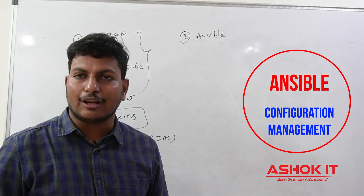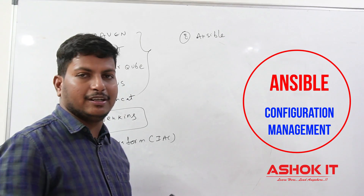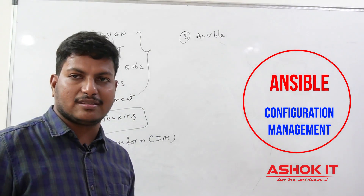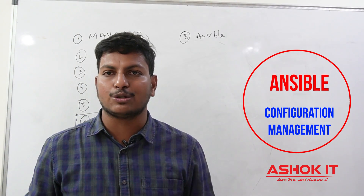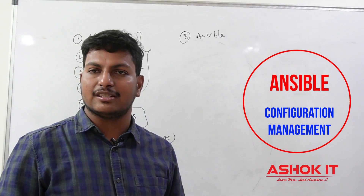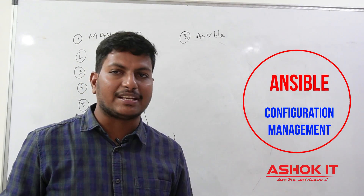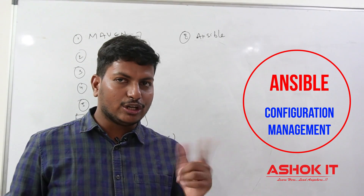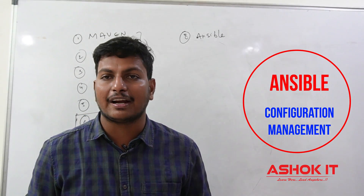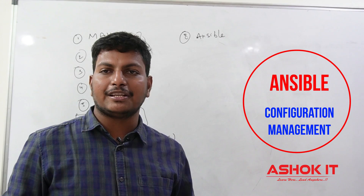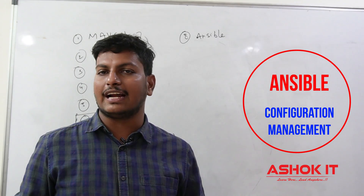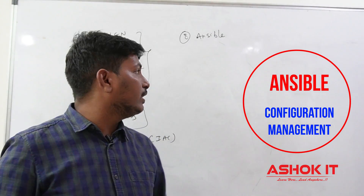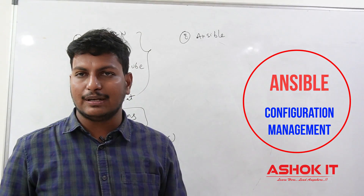The next one is Ansible. Ansible is called as configuration management software. For example, if our project is using 100 machines and in all 100 machines we want to do OS patching, or install some software, or uninstall some software — doing that operation manually is very difficult and time-consuming. That kind of manual work we can automate by using Ansible. It is called configuration management software.